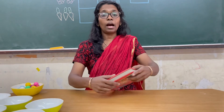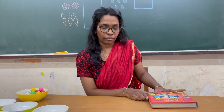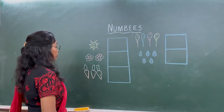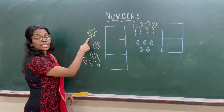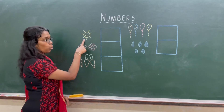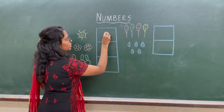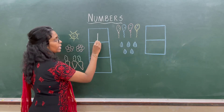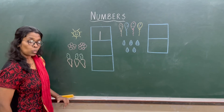Now let us see how to write the number 5. Here — let's see what's this. How many? 1. So how do we write the number 1? It's easy — just a vertical line. That's a vertical line.